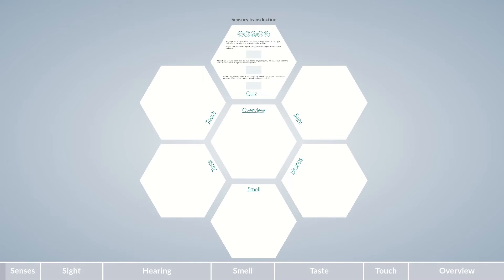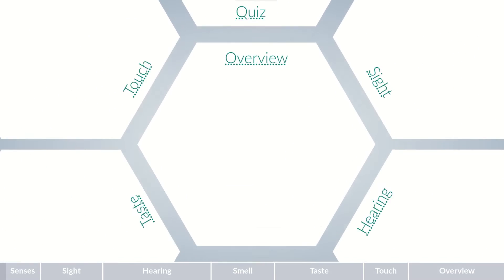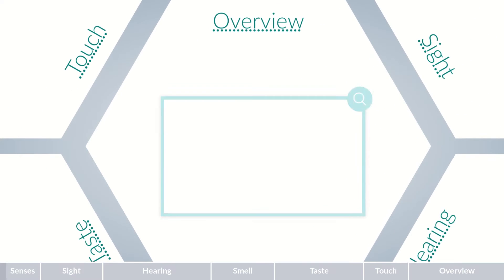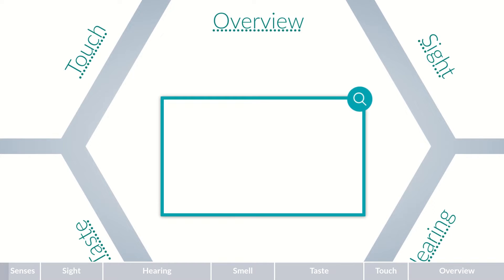Sensory transduction. Have you wondered how our senses work? The body requires specific sensors to perceive the environment. There are sensory cells for all five senses. In this chalk talk episode, we'll be introducing you to sensory transduction.